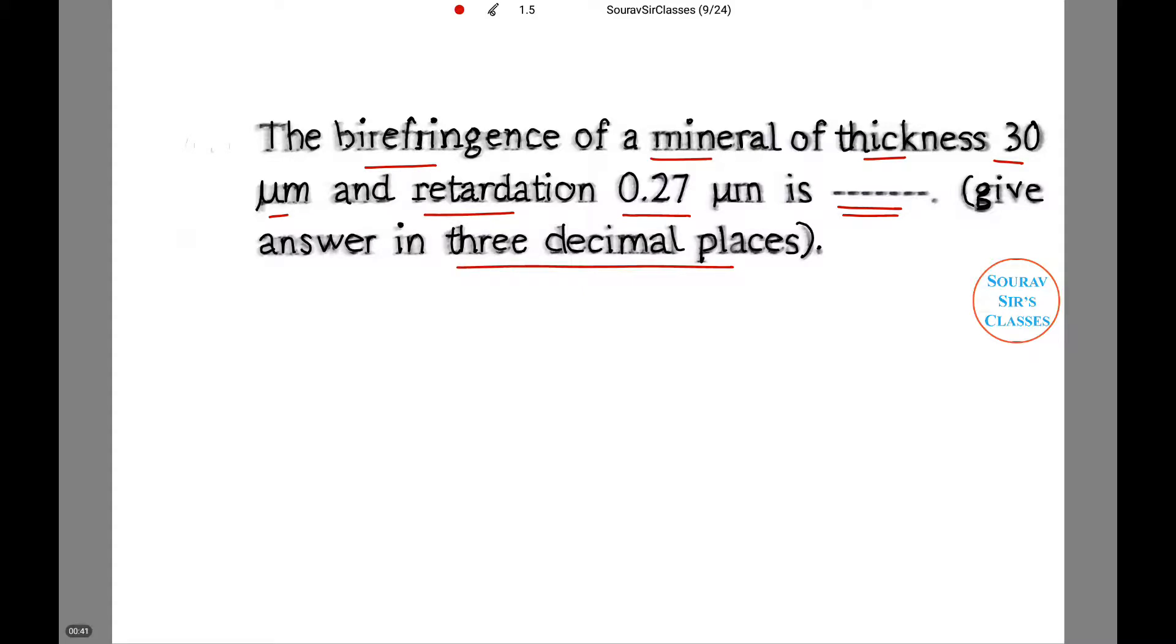So let us find out this. Now we know that the birefringence of a mineral with thickness, say t, is equal to 30 μm and we have retardation, denoting it by Δ (delta), is 0.27 μm, and we need to find out the birefringence.